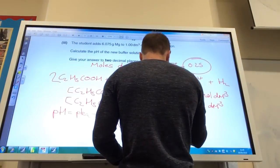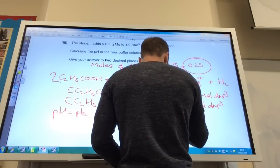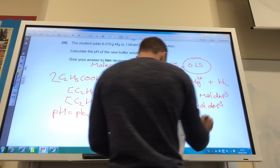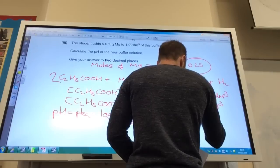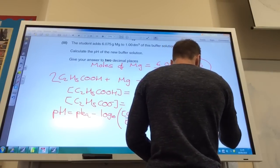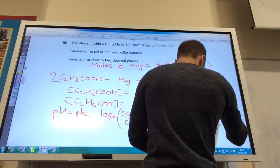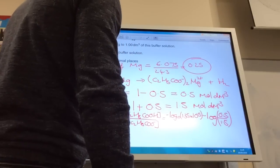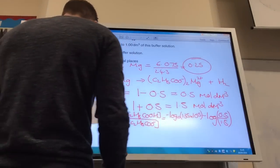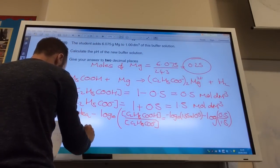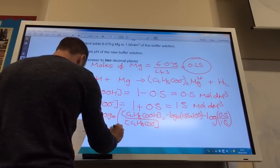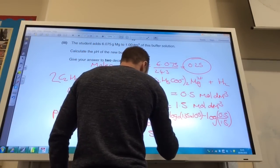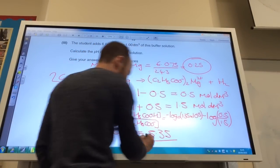If you bung that in, you get minus log to the base 10 of 1.35 times 10 to the minus 5 minus log 0.5 divided by 1.5, like so. And that equals 4.87 plus 0.48, which gives you a final pH of 5.35.